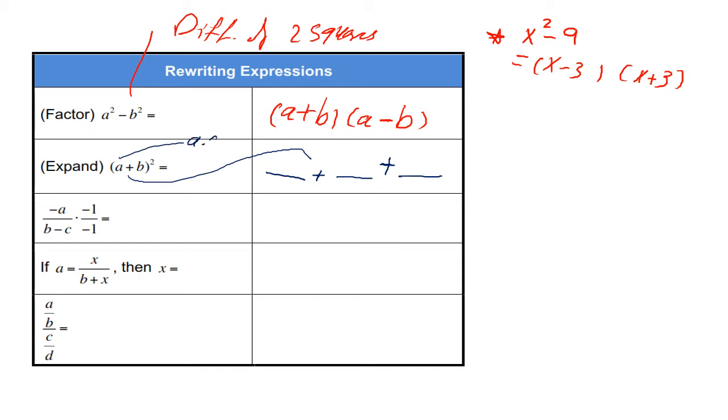A multiplied by itself is A squared. B multiplied by itself is B squared. And the middle term is A multiplied by B multiplied by 2, so it's 2AB.